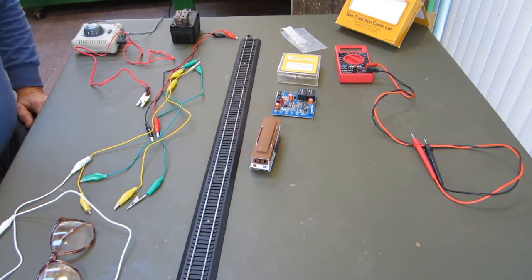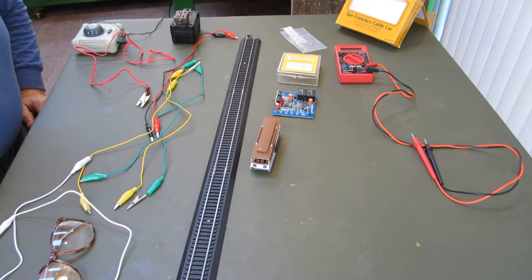This is a demonstration of Circuitron's automatic reverse circuit AR2. The AR2 differs from the AR1 in that it allows a time delay at each stopping point.